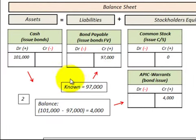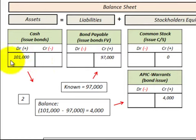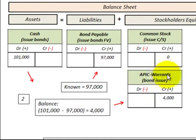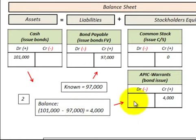The way we do that is we take our known amount — in this case the bonds payable — which had a value of $97,000. The bonds would be issued at a discount for $97,000. We know what we received for these bonds: $101,000. So we have the credit amount and the debit amount. The balancing amount goes to the warrants — the additional paid-in capital for the warrants — as the equity portion. The difference between the $101,000 received and the $97,000 discounted carrying value is allocated to these warrants, which would be $4,000. So we increase additional paid-in capital for warrants by $4,000.